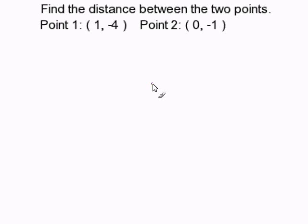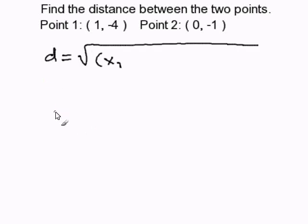Finding the distance between two points. In order to find the distance between two given points, we can simply use the distance formula, and the distance formula is written as d equals the square root of (x₁ - x₂)² plus (y₁ - y₂)².